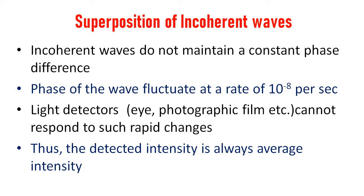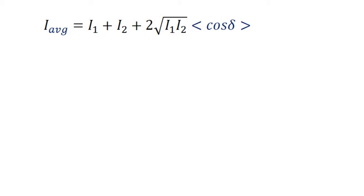For common light sources, we cannot detect the exact value since the phase fluctuates at 10 to the minus 8 per second — we will get only an average value. We know the equation I = I1 + I2 + 2√(I1·I2)·cos δ. In the case of a common light source or incoherent waves, we take the average value of I, represented as I_average = I1 + I2 + 2√(I1·I2)·⟨cos δ⟩.